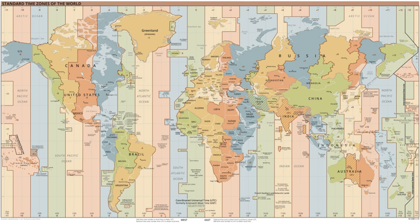Greenwich Mean Time is used as standard time year-round in the following countries and areas: Iceland, Burkina Faso, The Gambia, Ghana, Guinea, Guinea-Bissau, Ivory Coast, Liberia, Mali, Mauritania, Sahrawi Arab Democratic Republic, Senegal, Sierra Leone, Togo, St Helena, Ascension and Tristan da Cunha.